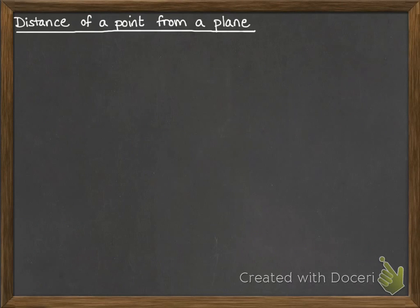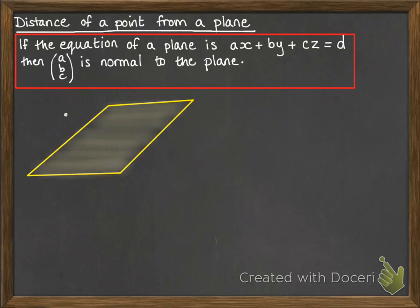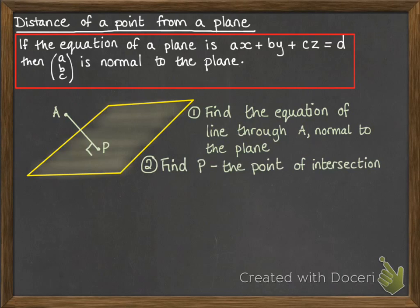Now, finding the distance of a point from a plane. One thing you need to know is that if you have the equation of the plane in Cartesian form, you can get the normal straight from it by reading off the coefficients of x, y, and z. Here's our plane and our point A. We want the shortest distance, so we need the distance that's perpendicular to the plane. We'll call point P the place where the perpendicular line from A meets the plane. First, we'll find the equation of the line through A that is normal to the plane, then find P — where that line intersects the plane — and then calculate the distance between A and P.